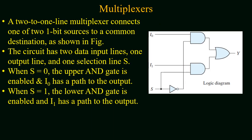For a digital system, a 2-to-1 line multiplexer connects one of the two 1-bit sources to a common destination as shown in the figure. The circuit diagram has two data input lines, one output line, and one selection line, because two data lines equal 2^1 so we have one selection line. The data lines are connected to two AND gates and their outputs are OR'd to provide a single output. The select line acts as a second input of the AND gate.